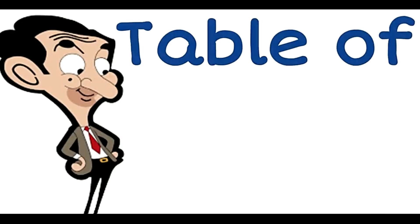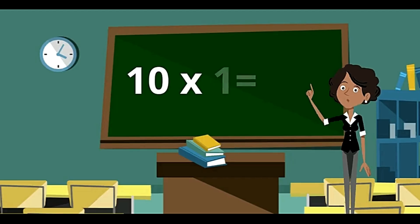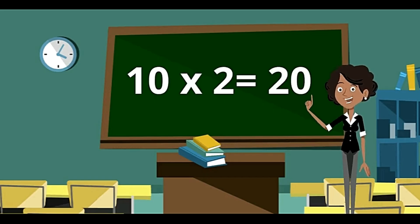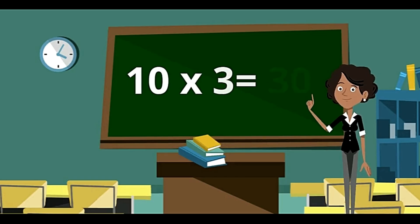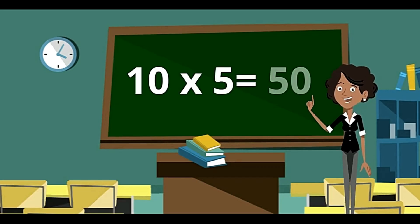Now kids, we will be learning the easiest table — table of 10. 10 ones are 10. 10 twos are 20. 10 threes are 30. 10 fours are 40. 10 fives are 50.